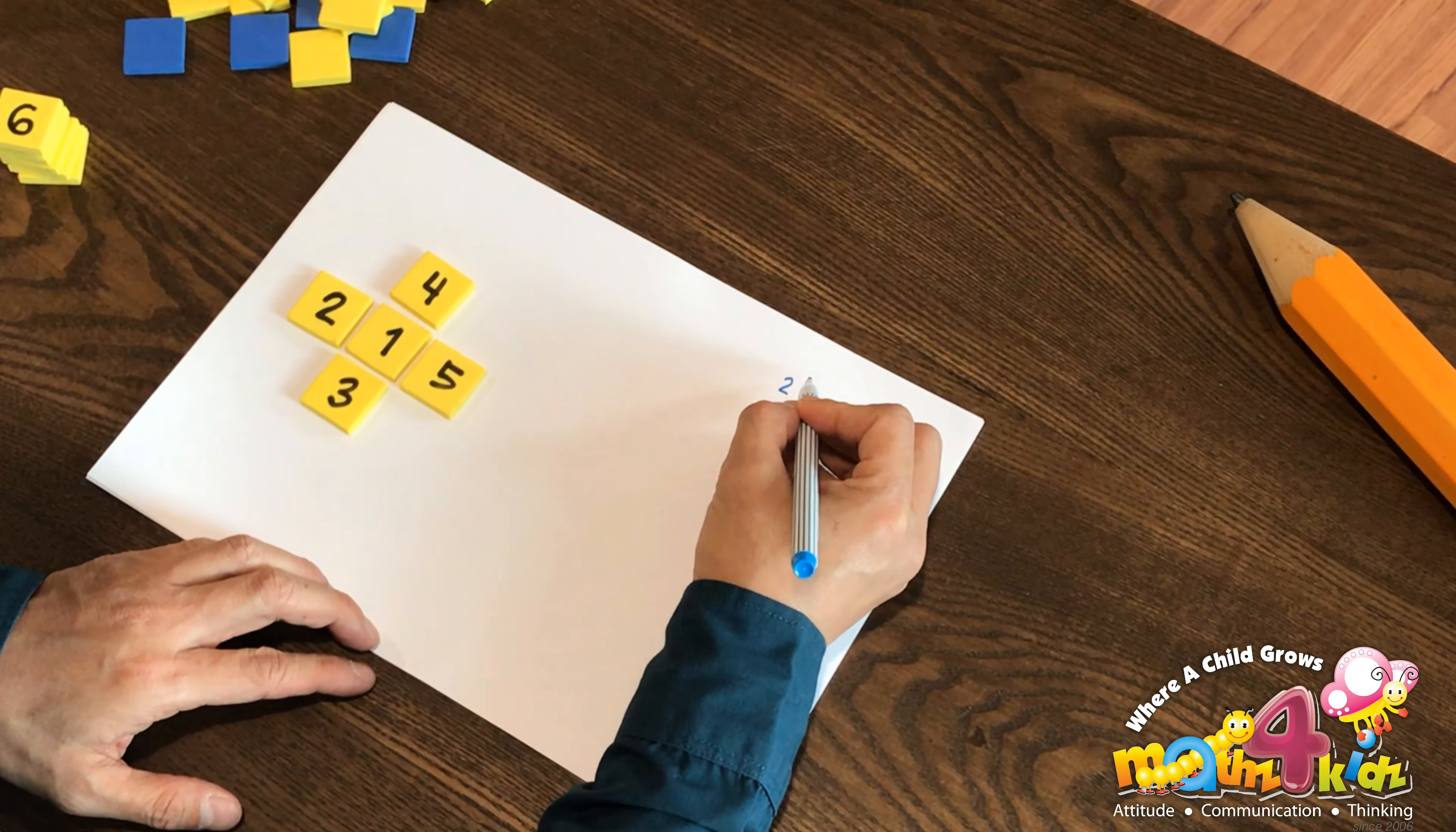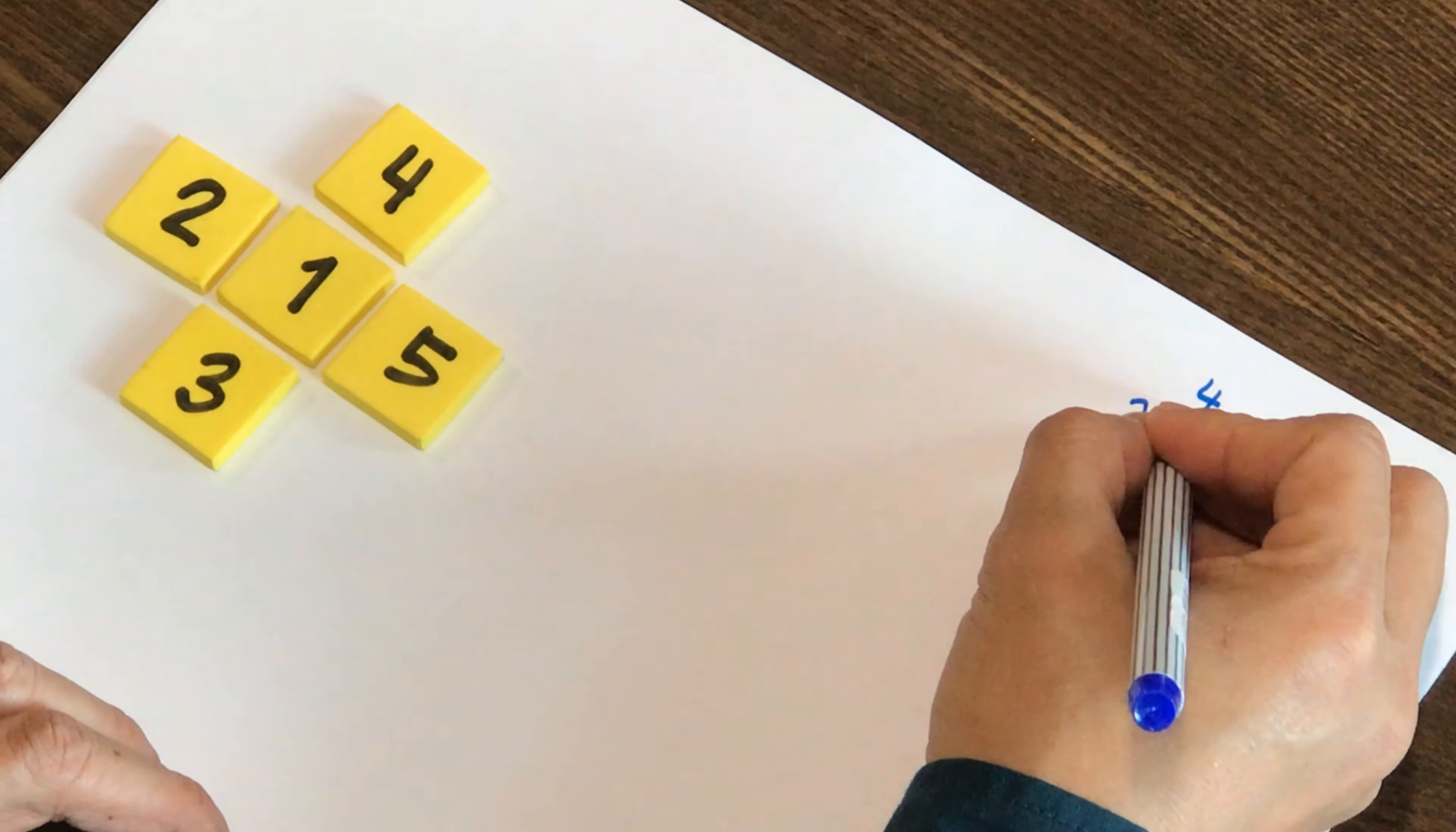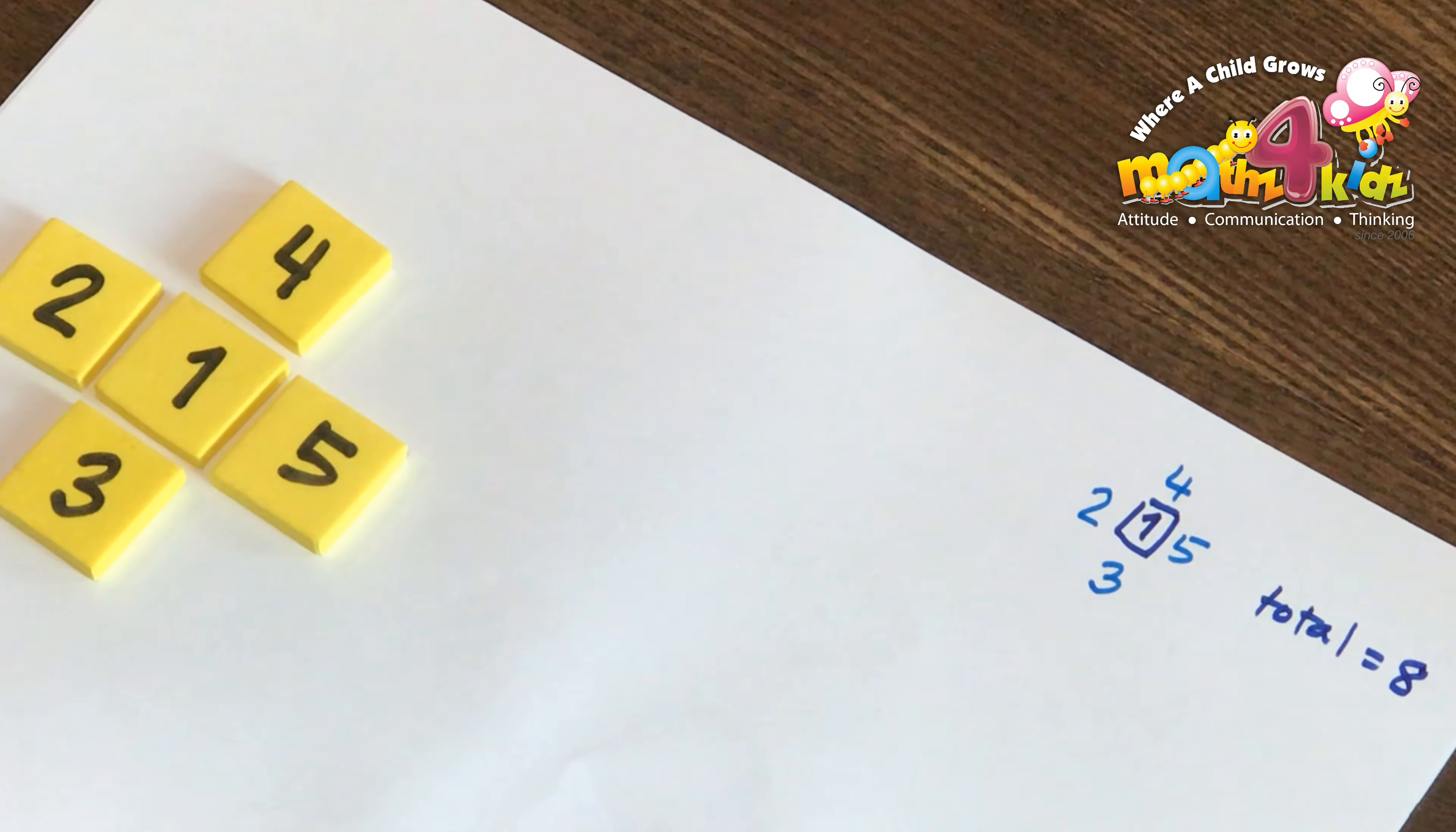2 here, 4 here, 5 here, 3 there, and right in the middle, I have 1. So 1 is in the middle, and the total is 7 and 1, 8, either way it's 8. So the total has a value of 8. That's one possibility.